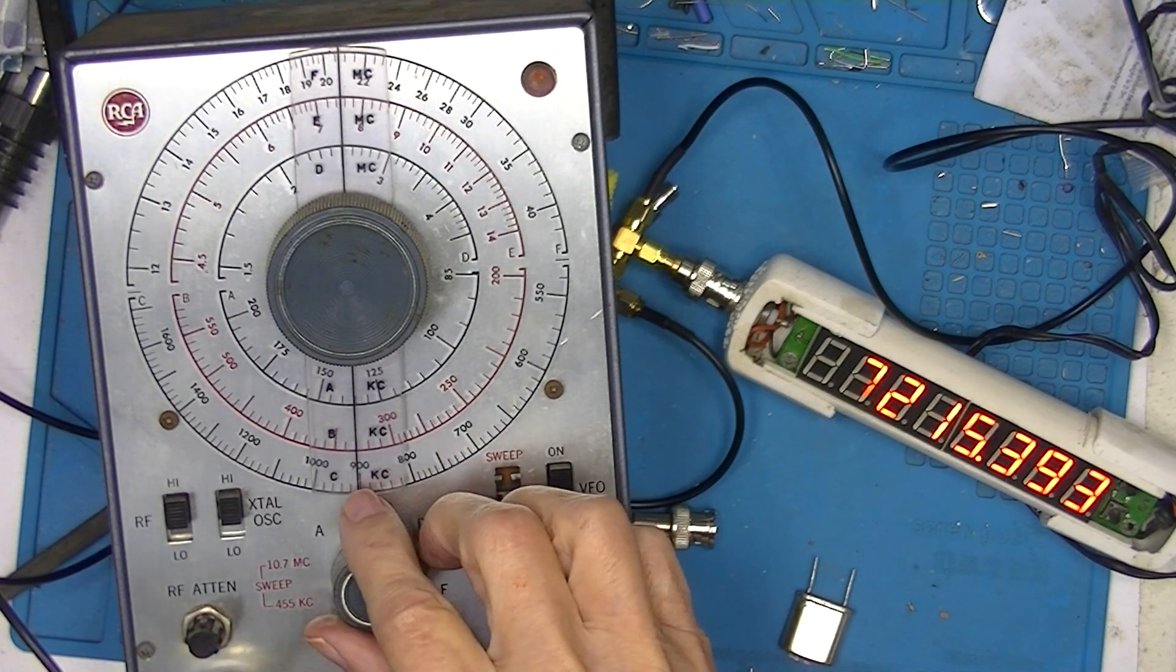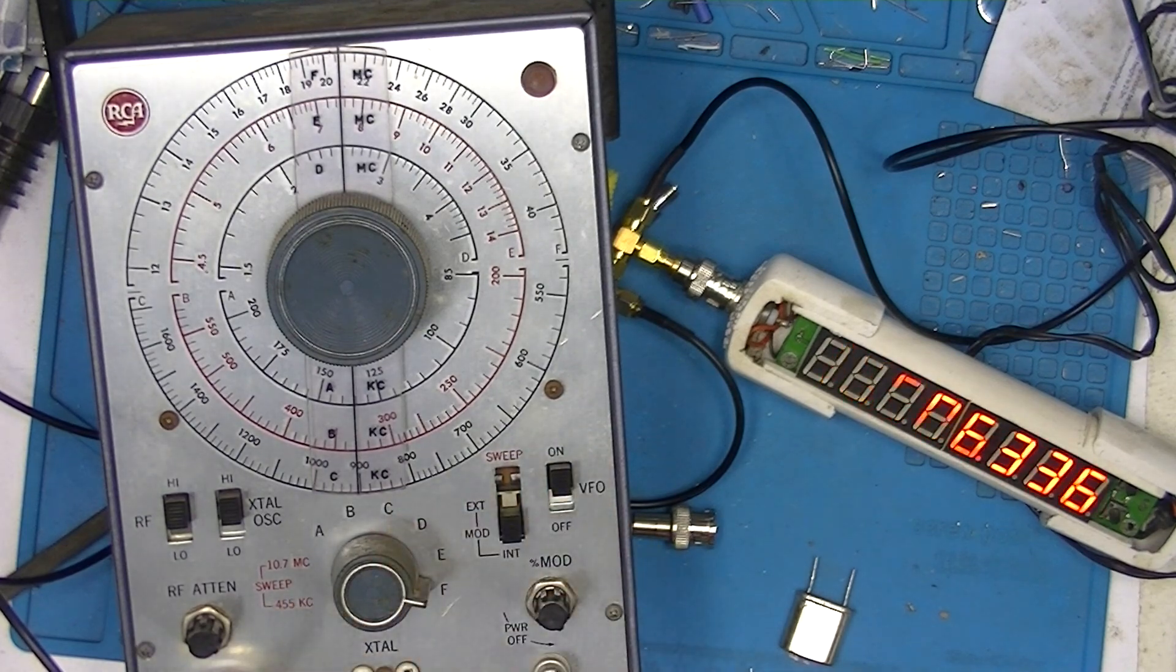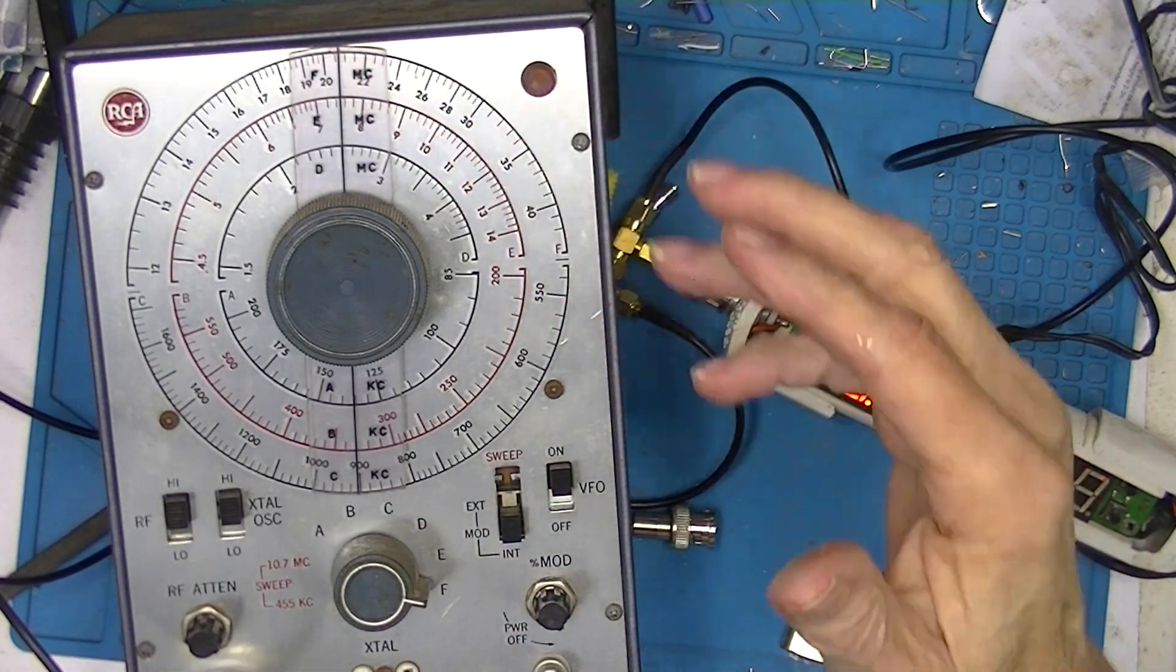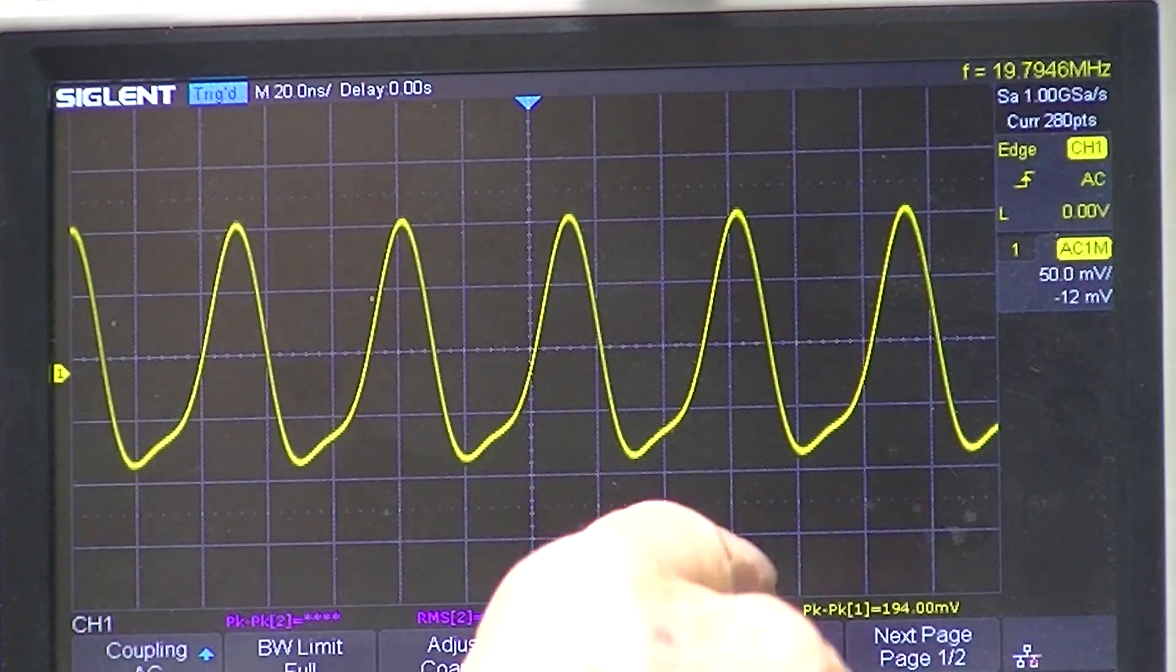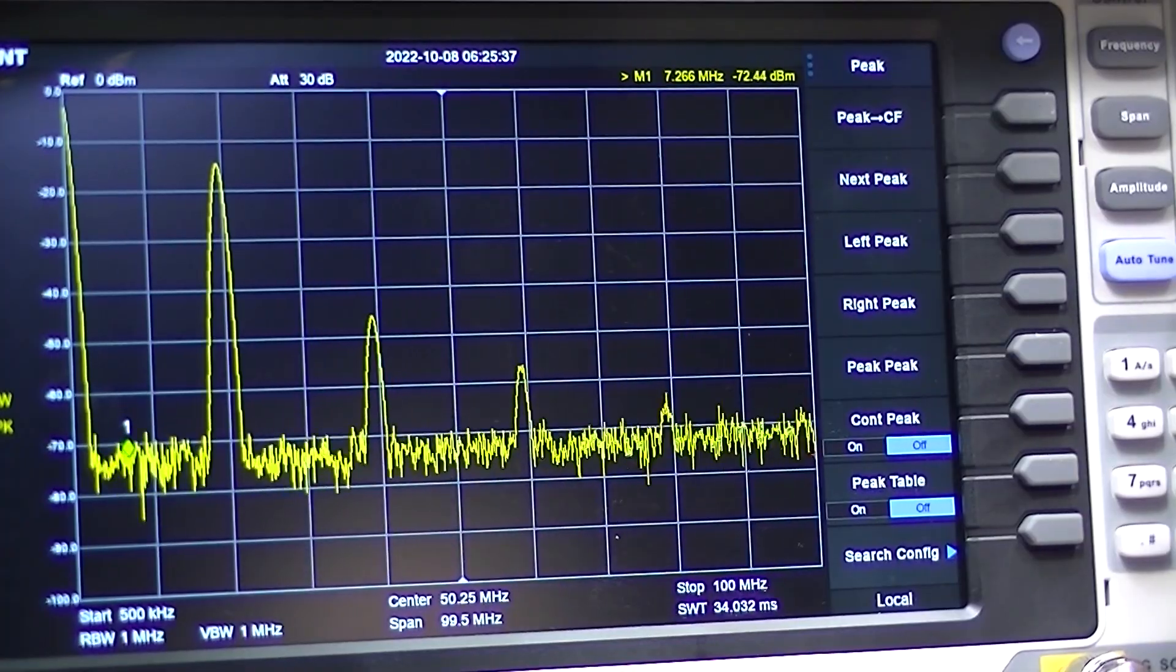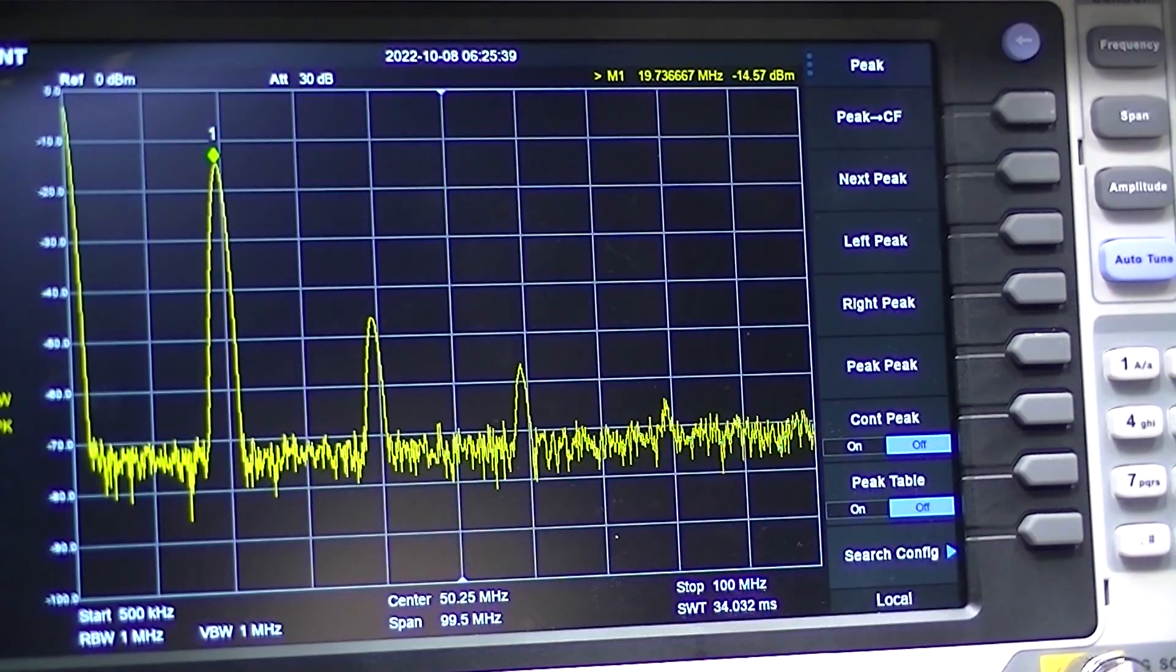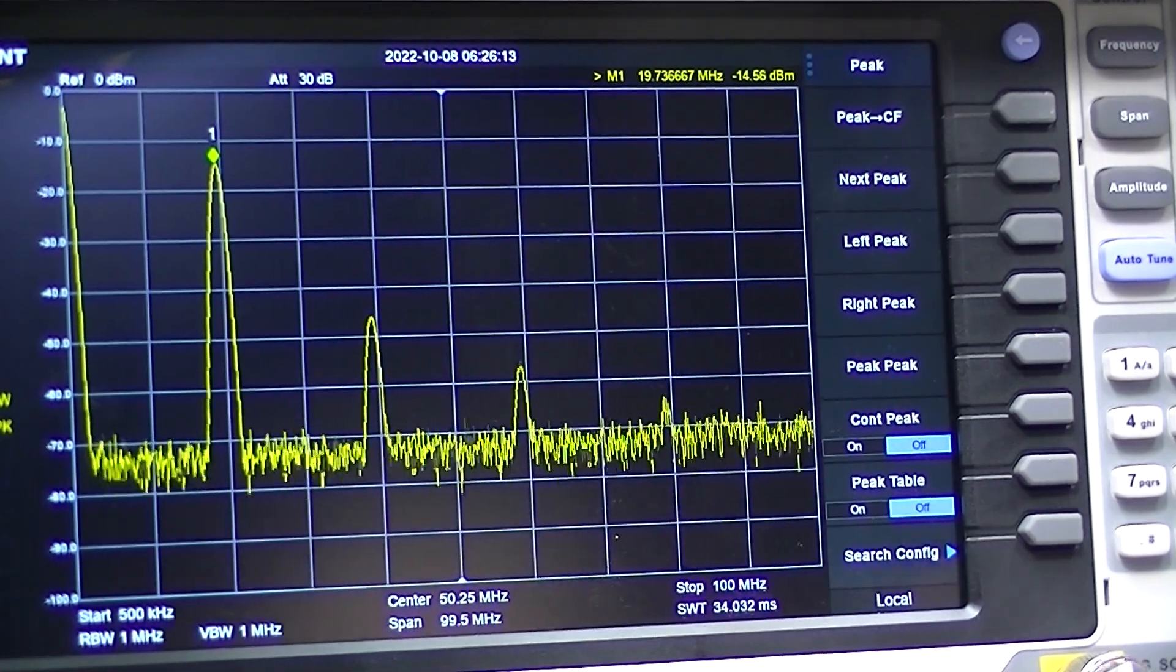I will go to F scale which should put us at 21 plus megahertz. 19 on the oscilloscope, and the peak on the spectrum analyzer is at 19.7 MHz. We can see four harmonics now.